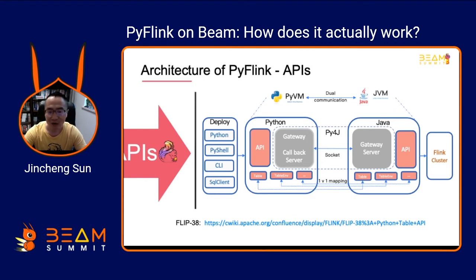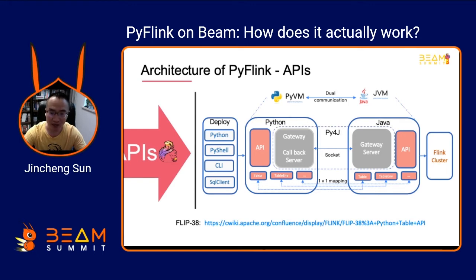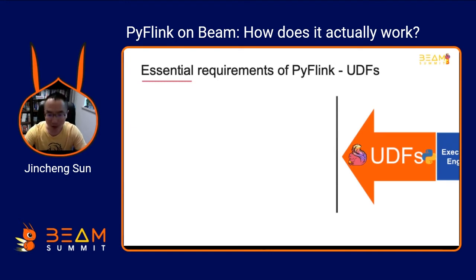Let's take a look at the architecture of the PyFlink API. We use py4j to solve communication problems — starting a gateway in the Python VM, and also needing a gateway server in the Java VM to accept Python requests. This provides class definitions exactly aligned with the Java API. For Python user-defined function support, we also have the same requirements.